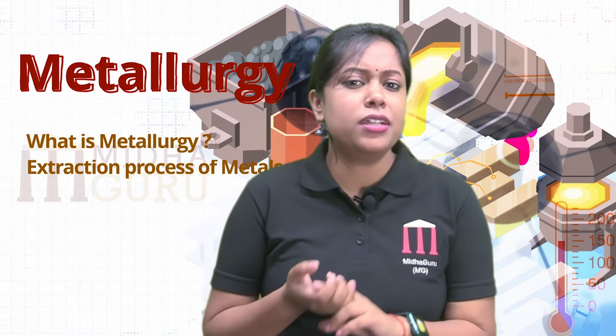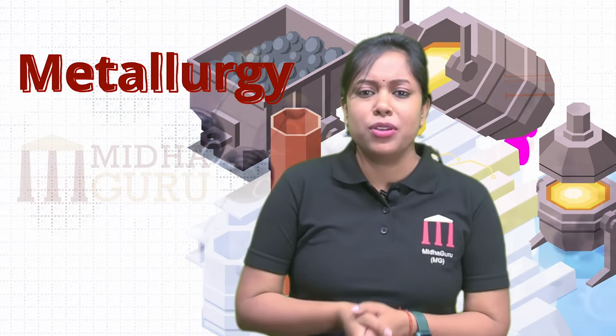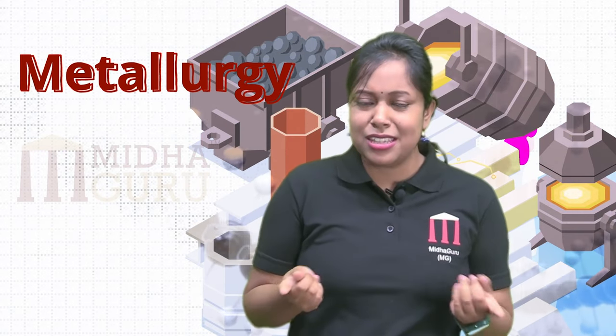Let us understand the contents I am going to cover in this chapter. First, we will understand metallurgy and the extraction process of metals, and we will focus on the extraction of aluminium. Then we will understand alloys, and finally we will also solve previous year questions which have already come in your exam. Let's start the session.